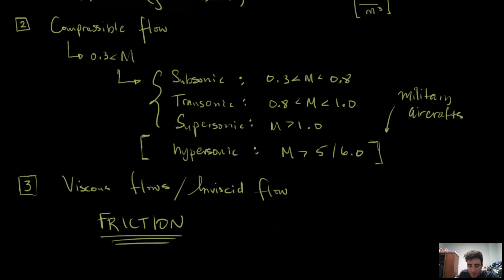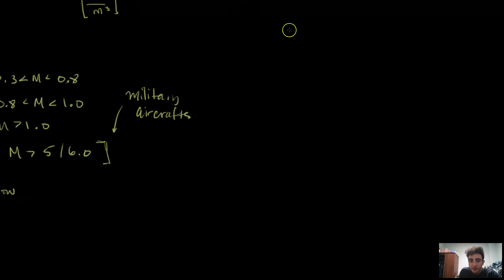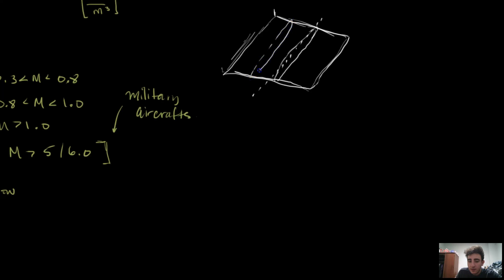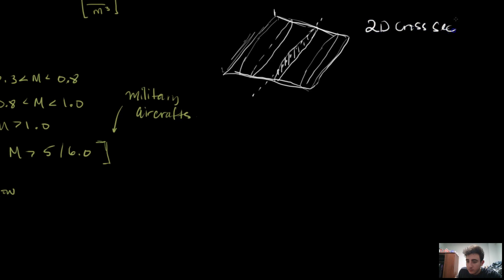So imagine I have a wing here, like an airplane wing. Let's say this is a three-dimensional wing, and if I want to take a cut of this wing, the cross-section maybe looks something like this. It's just a two-dimensional cross-section of the wing — if I cut this thing in half and look at it from the side, this is the cross-section of it. The cross-section has a specific name: it's called an airfoil.